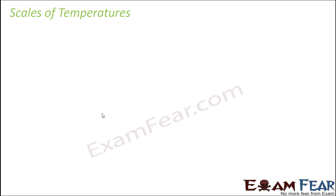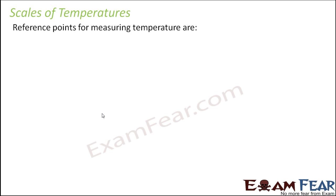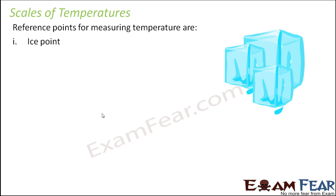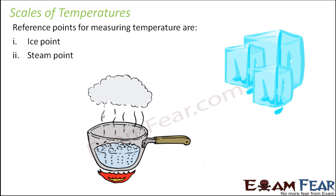So how do we distinguish the different scales of temperature? What is the common basis on which we have divided these different scales? There are two fixed reference points for measuring temperature, and those two points are the ice point and the steam point.